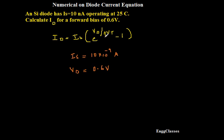Eta is not given directly, but it has been said that the diode is silicon. And we know that eta, that is the ideality factor, is 1 for germanium and 2 for silicon. Hence, eta is equal to 2.